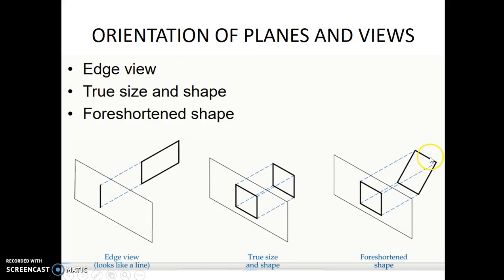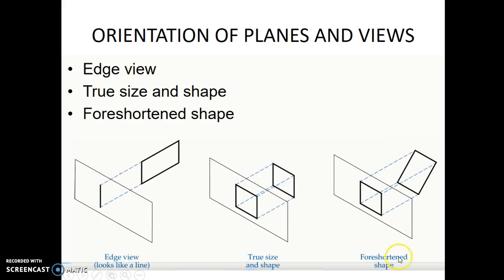In this figure we see a plane whose projection is taken on the projection plane. The projected view is smaller in size compared to the object plane. This view is called a foreshortened view of the object — a foreshortened shape — where the size of the view is less than the size of the object plane.